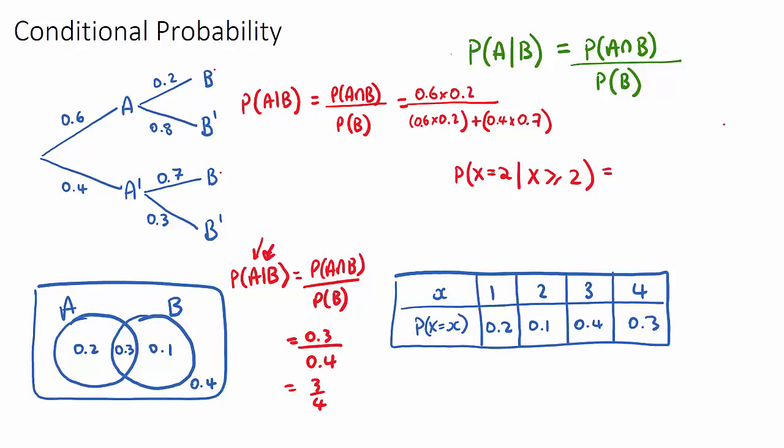This would be the intersection of when x equals 2 and is greater than or equal to 2, which, if it needs to be in both, it would just be when x is equal to 2. So it would be this 0.1 as the numerator, 0.1, because that's when it is in both of these probabilities, both of these events.